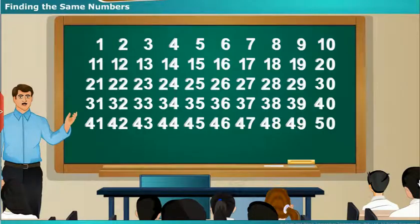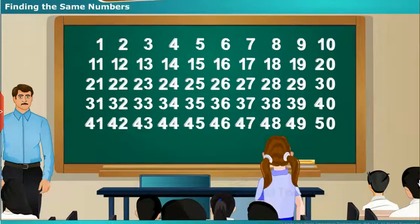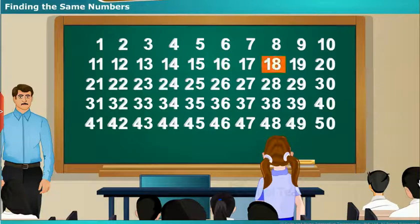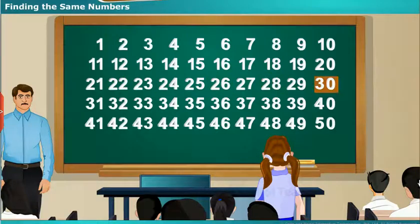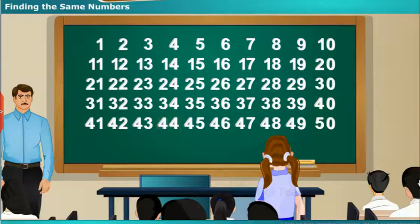Haritha, tell us the numbers starting from 2 by giving 2 spaces for each number. 2, 4, 6, 8, 10, 12, 14, 16, 18, 20, 22, 24, 26, 28, 30, 32, 34, 36, 38, 40, 42, 44, 46, 48, 50.